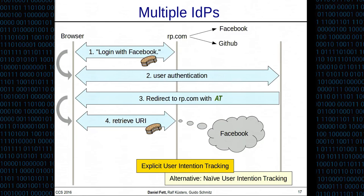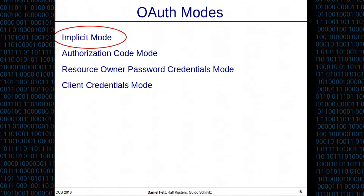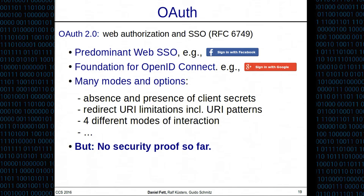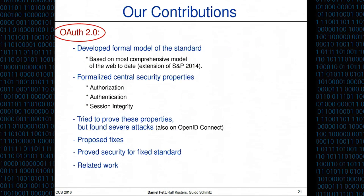This was the implicit mode of OAuth — the other modes are covered in the paper. As you can see, OAuth is rather complex. So far, there was no security proof for OAuth, and this is what we were interested in. Therefore, we developed the formal model of OAuth and went on to formalize the security properties of OAuth.